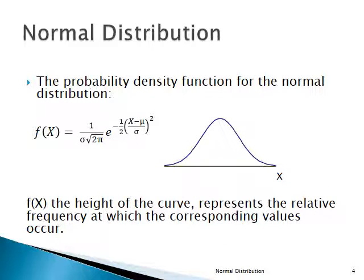The actual function for a normally distributed random variable: X is the random variable, and f(X) is the height of the curve. In that formula we see X, some constants 1, 2, e, and pi, and two other symbols: mu and sigma. Mu is the population mean, and sigma is the population standard deviation. Those are parameters. Every normal distribution has its own mu and sigma, and therefore its own slightly different location — that's what mu tells us — and spread, which is what sigma tells us.